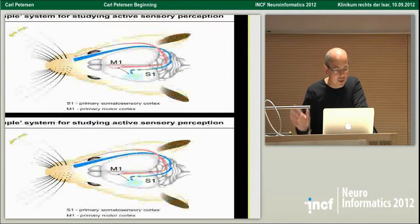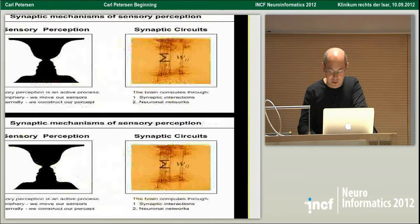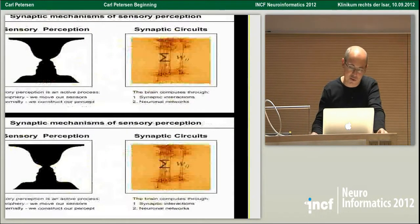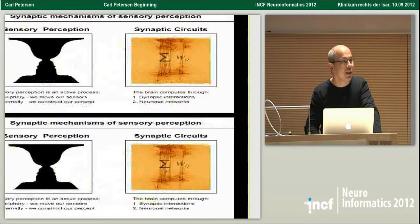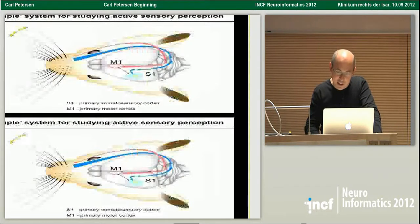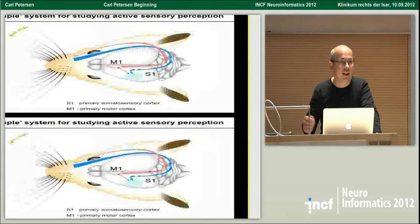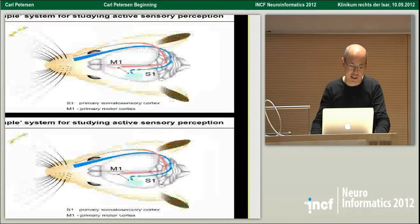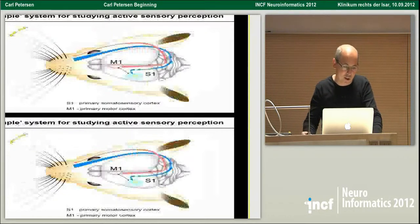Vision is the situation we're most familiar with in terms of sensory perception. But we're interested in looking at mice because this is convenient in terms of access to genetic tools. In particular, mice have a whisker system that we think is quite useful, and where it might be possible to get a quantitative understanding of what's going on.